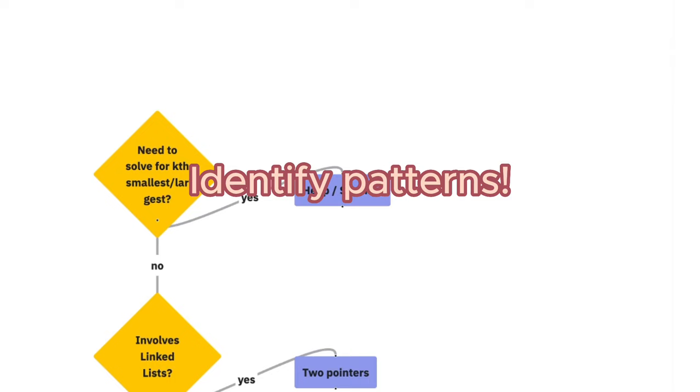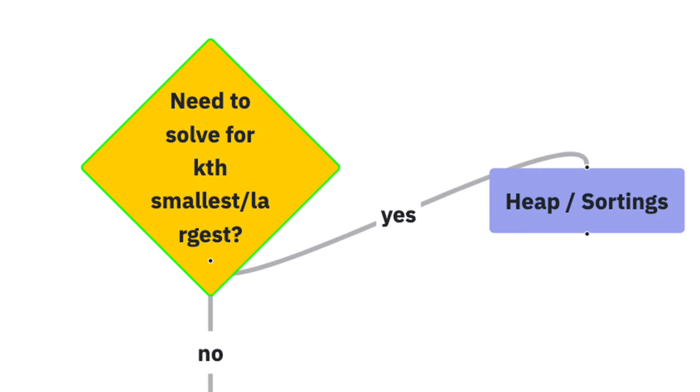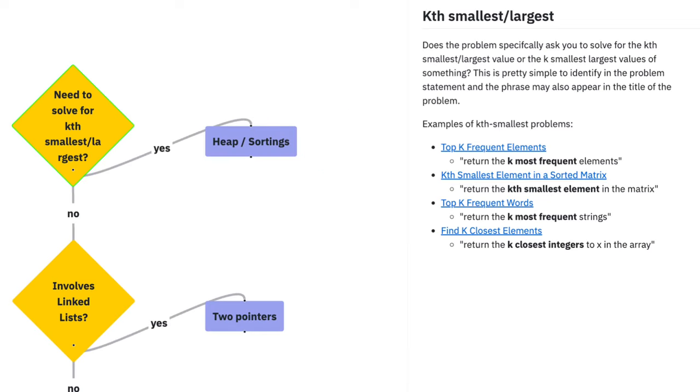Make sure to check out this flowchart at algo.monster/flowchart. Using the flowchart is simple and efficient. Begin at the tree's root where you'll find the initial diamond node with a question. Answer the question and move along the corresponding yes or no branch. To ensure a smooth experience, we've added detailed explanations and examples on the side panel that shed light on each condition.